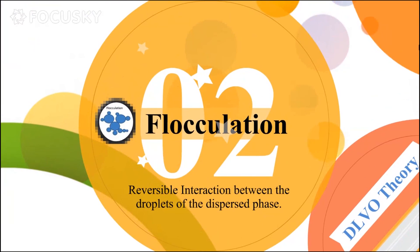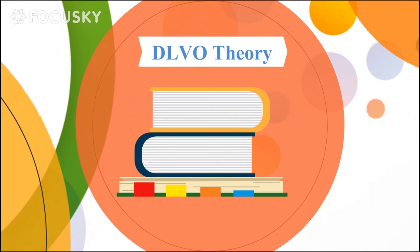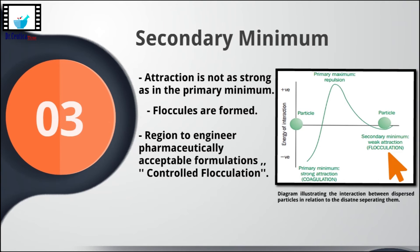The second instability for emulsions is flocculation. This refers to reversible interaction between the droplets of the internal or dispersed phase, happening because of van der Waals forces. These interactions can be broken by shaking, which would then restore the state of having the droplets dispersed throughout the dispersion medium to yield a homogeneous formulation. This phenomenon can be better understood by watching the DLVO theory, covering how distance between particles or droplets can lead to reversible or irreversible interactions. A link to that suspension series video is in the description box.